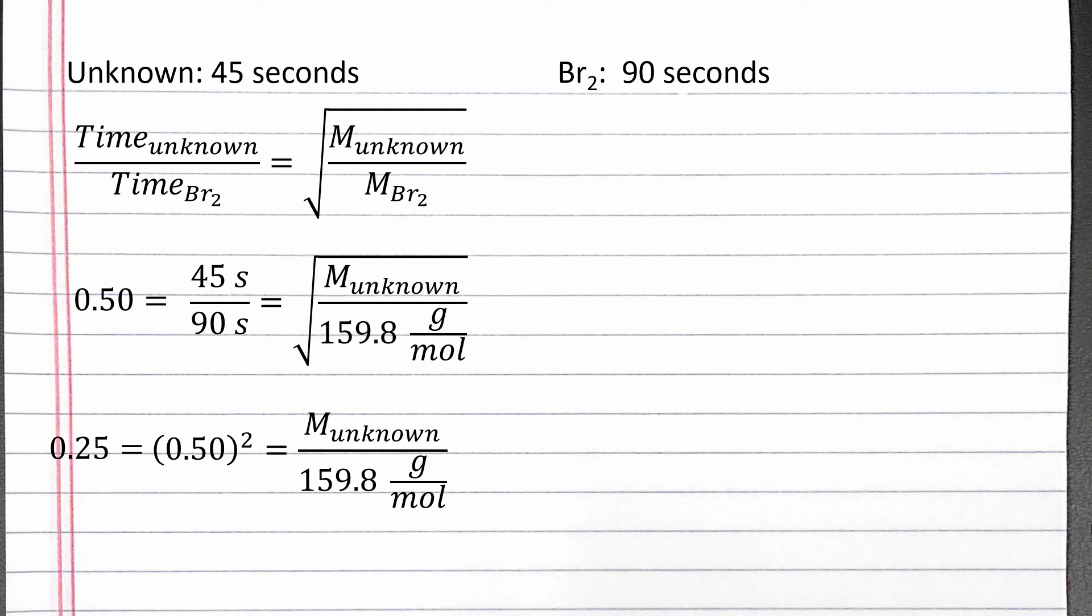Then, to solve for the molar mass of the unknown, we multiply both sides by 159.8 grams per mole. Completing the calculation, the molar mass of our unknown is 39.95 grams per mole.